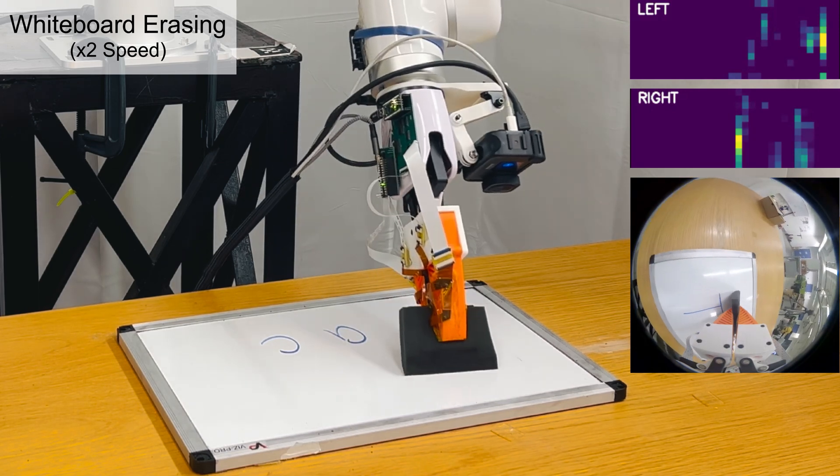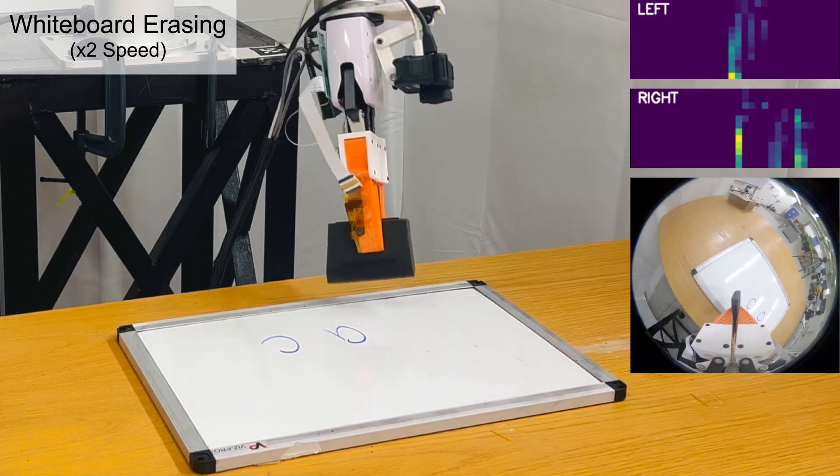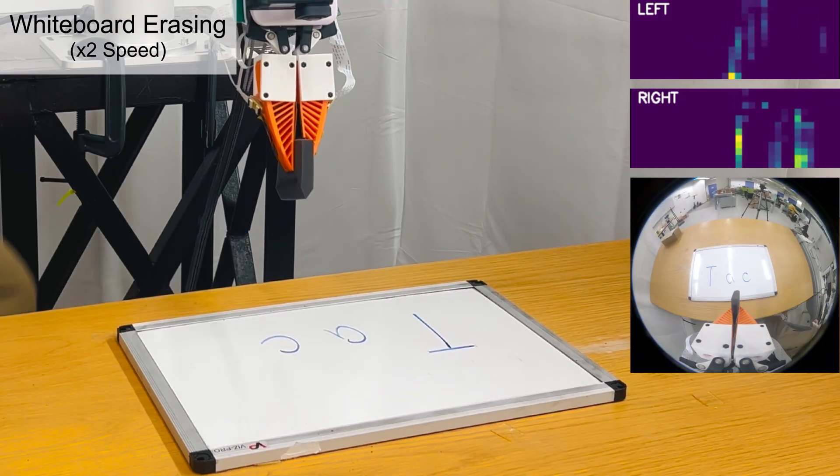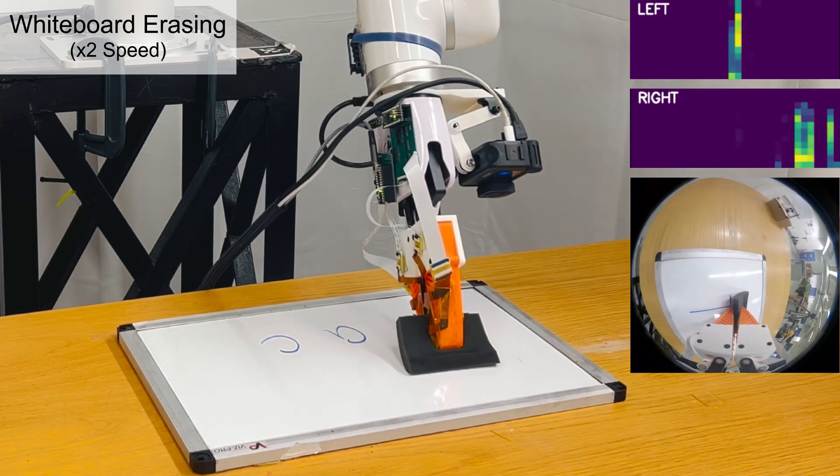In the whiteboard erasing task with human disturbances, the policy can detect and erase newly written text in real-time, even as a human continues to write on the board.